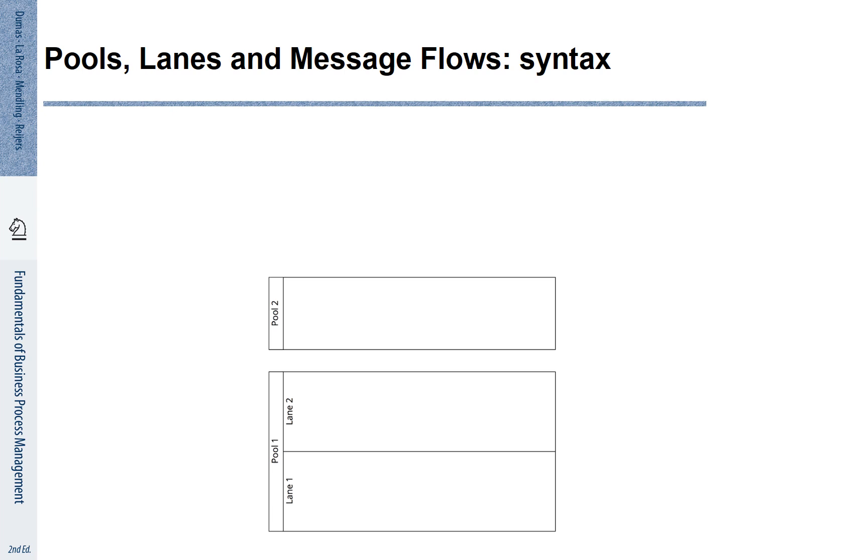Now let's look at some rules. We cannot just connect anything how we want. There are some connections of message flow that are explicitly allowed because they make sense. Some of them are explicitly forbidden.